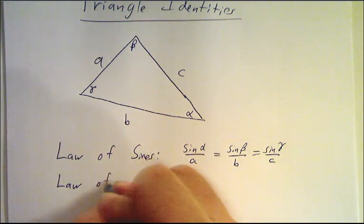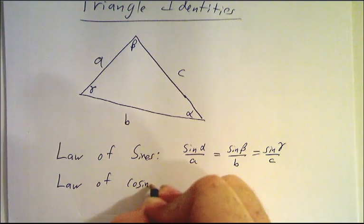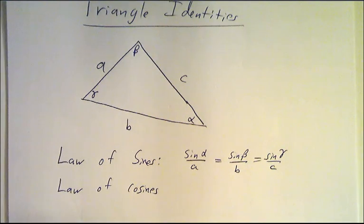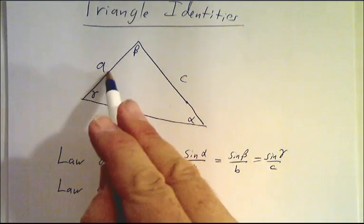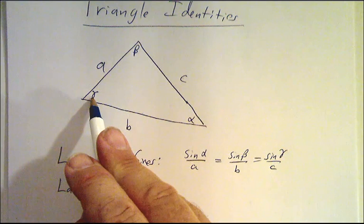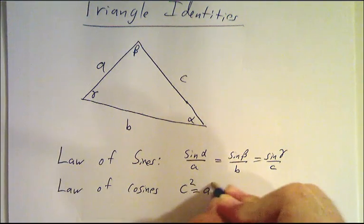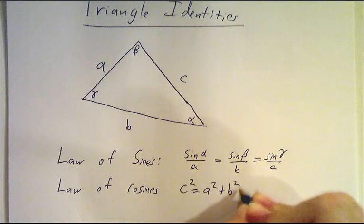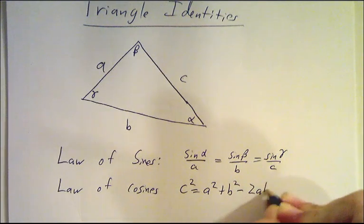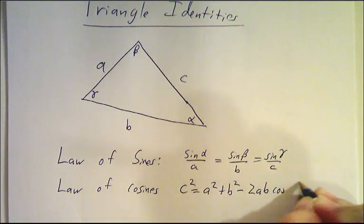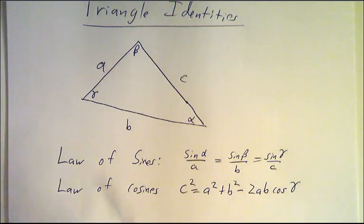The law of cosines gives the length of any one side in terms of the other two sides and the angle. So we'll do it for C. It says that C squared is A squared plus B squared minus 2AB cos gamma. So if this were a right triangle, then the cos would be zero and we'd get back the Pythagorean theorem.